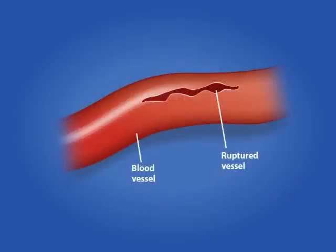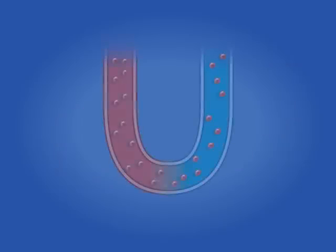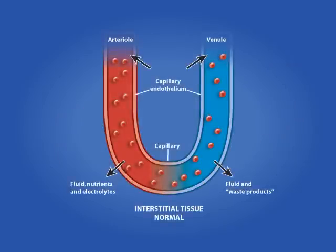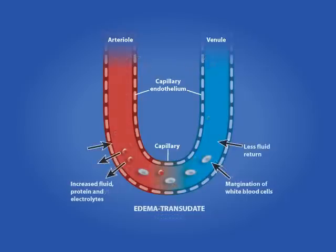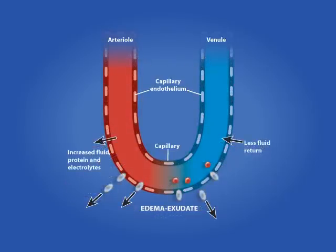Vasodilation leads to hemorrhage from the damaged vessels, causing the swelling in and around the injury site. As bleeding continues, blood volume to the injury site increases and a protein-rich exudate is formed.